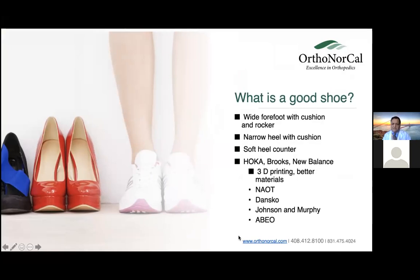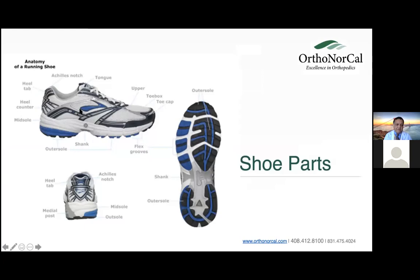A good shoe has a wider forefoot, a narrower heel, and a lot of cushioning. It can be a dress shoe or a recreational shoe. Hoka, Brooks, New Balance, Nao, Dansko, Johnston and Murphy, and Abeo are all competing in this space. The anatomy of a running shoe includes the outer sole, the shank, the rocker bottom, and the upper. The upper should be wider to accommodate the foot. The medial post in the heel determines if it's a high arch, medium arch, or low arch shoe. Most people do well in a stability shoe.